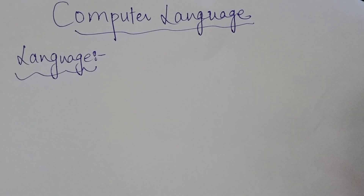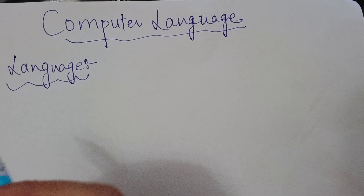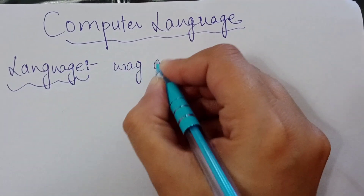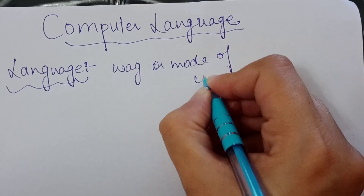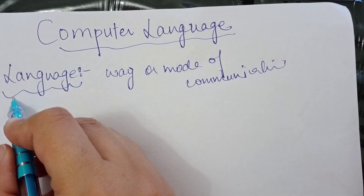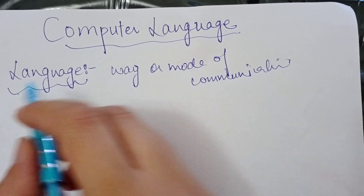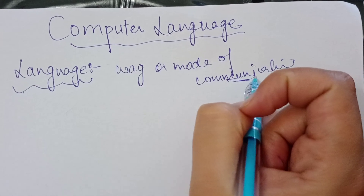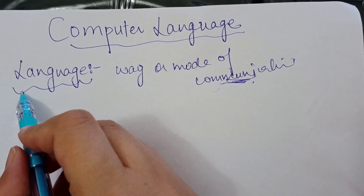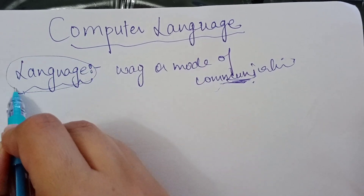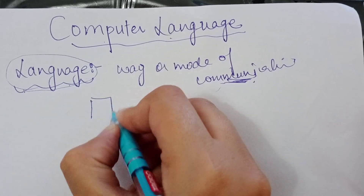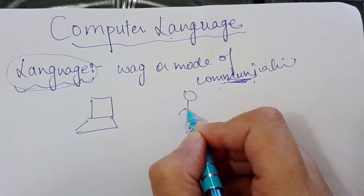In this video I'll discuss the topic called computer language. First of all we need to understand what is a language. Language is basically a way or mode of communication — when two entities want to talk to each other or want to communicate, meaning to understand each other's words or intentions. In this case, language is the mode of communication. When we talk about computer language, we have a computer at one end and the programmer on the other end.